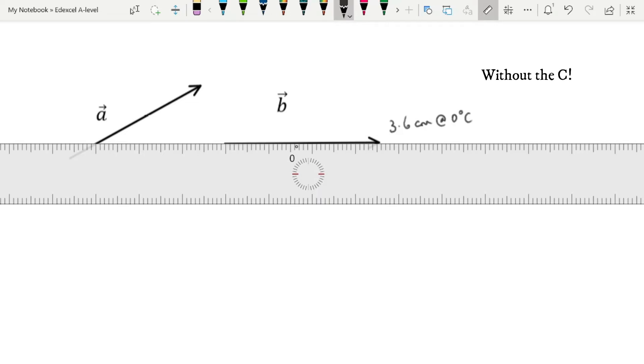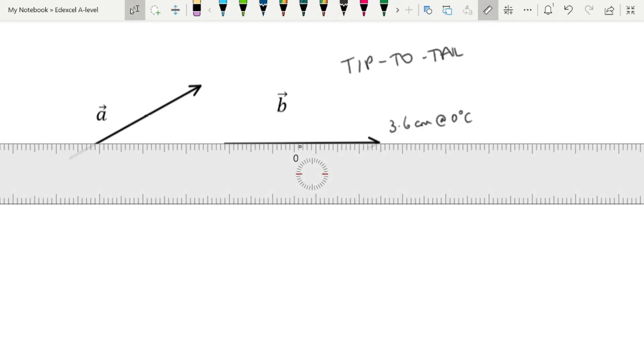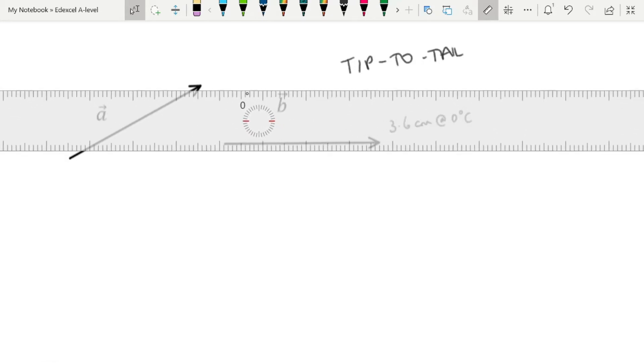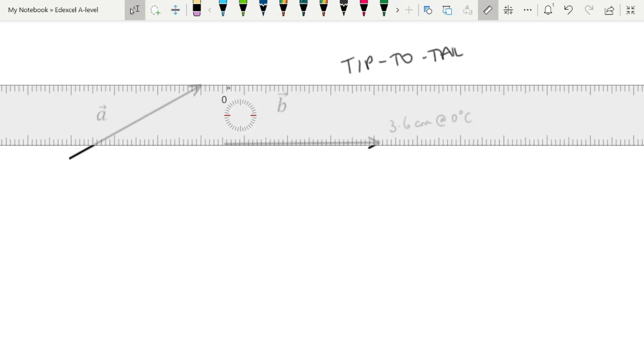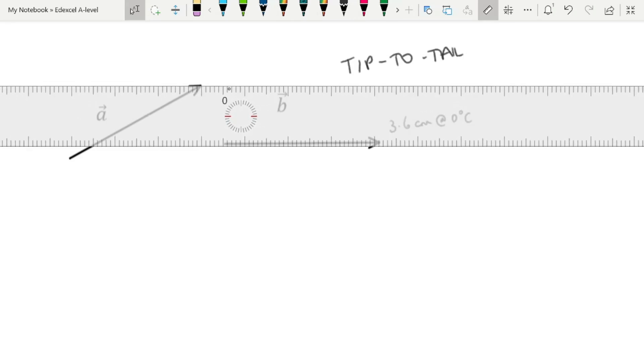The golden rule here is tip-to-tail. So when you're adding these vectors together, you have to make sure that you join them tip-to-tail. And the idea is you then move vector B up here. You keep it at the same angle, right to the tip of vector A. That's the tip. And this is the tail of vector B. And you draw 3.6 centimeters.